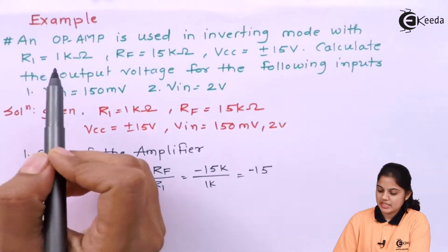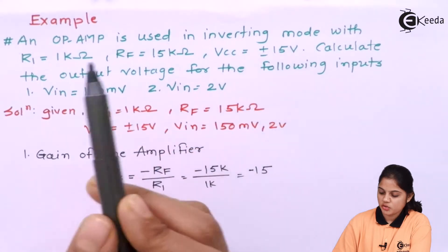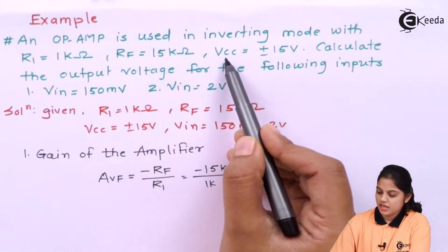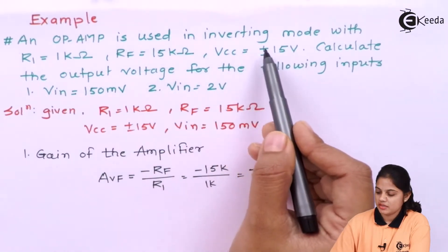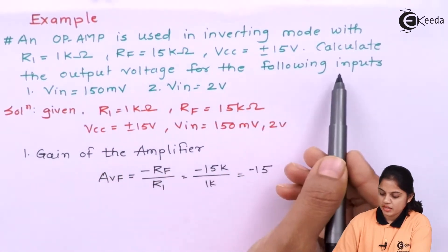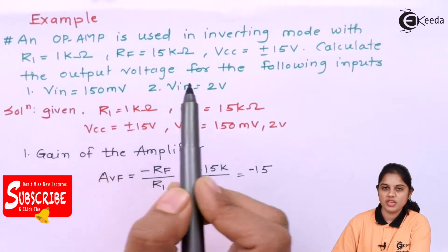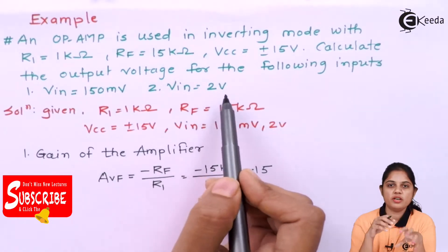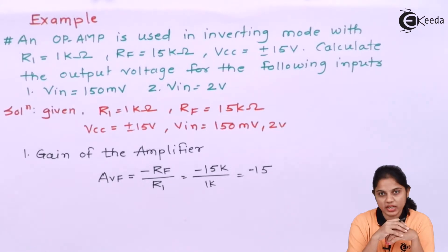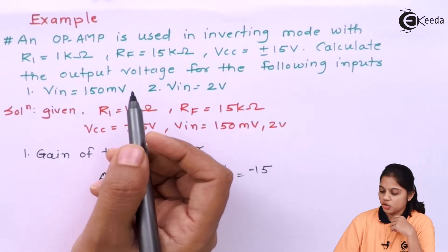So here we have an example. An op-amp is used in inverting mode with R1 equal to 1 kΩ, Rf equal to 15 kΩ, where Vcc is equal to ±15 V. Calculate the output voltage for the following inputs: when VIN is equal to 150 millivolt, and second when VIN is 2 volt.